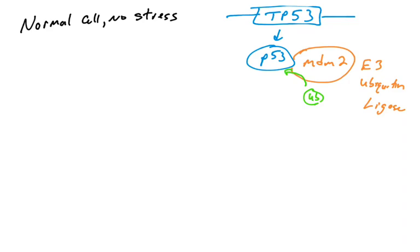In this case, MDM2's substrate is p53. So MDM2 binds p53, takes the ubiquitin, and covalently attaches it to the p53 protein. So this is the process of ubiquitination, which we know regulates protein stability in cells.